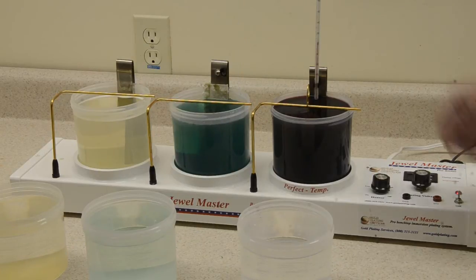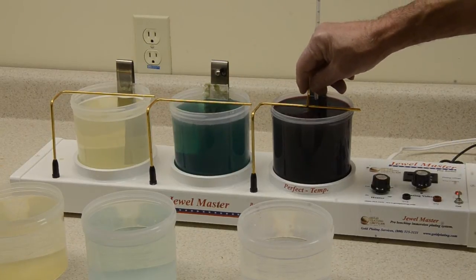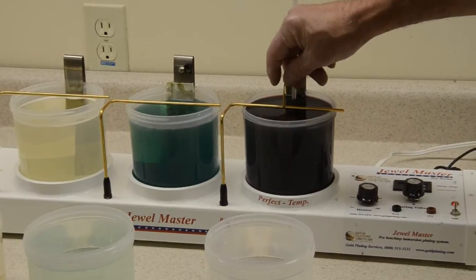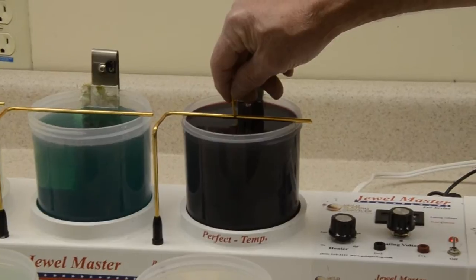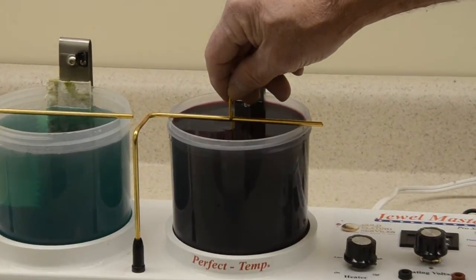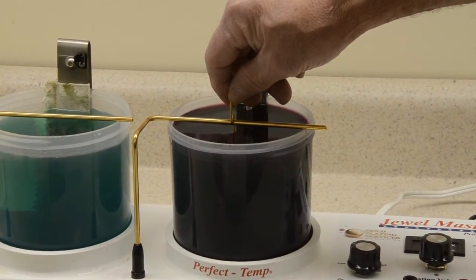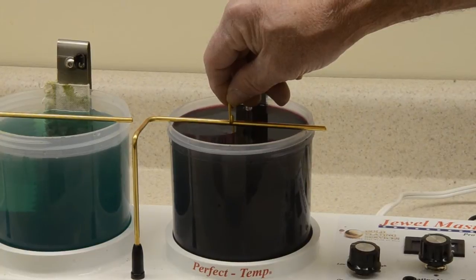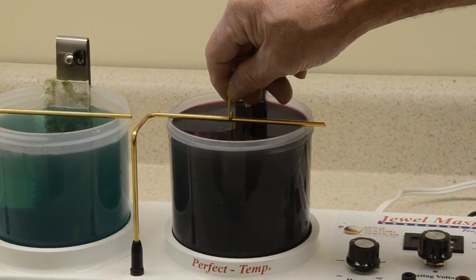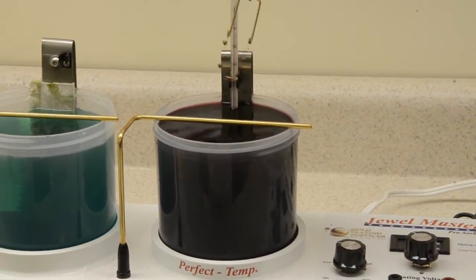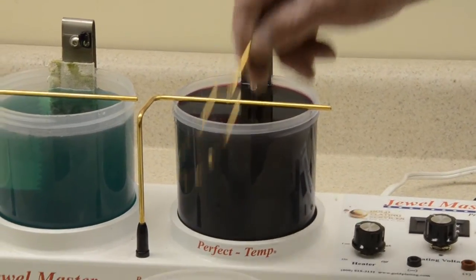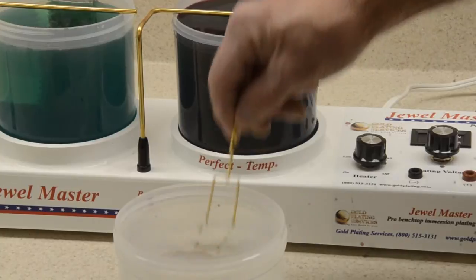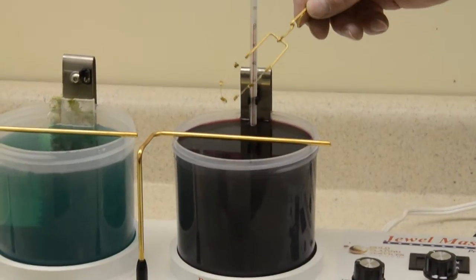Now the plating has been going on for about four minutes. It's important to note here that this should plate about a half a micron, which is a normal jewelry grade thickness of gold. However, if you wanted it to be thicker for more durability or longer lasting, you could actually plate twice as long and get twice the thickness. And the cost would not be that significant on parts this tiny.